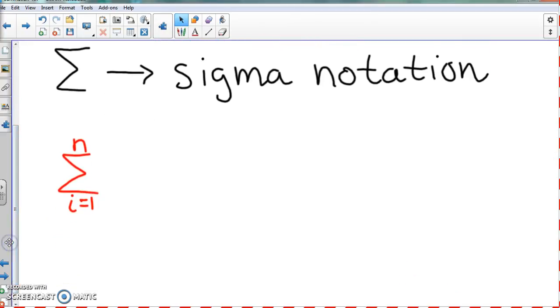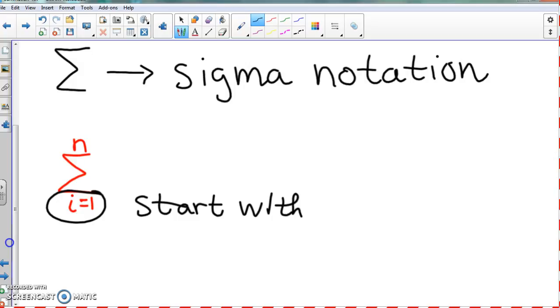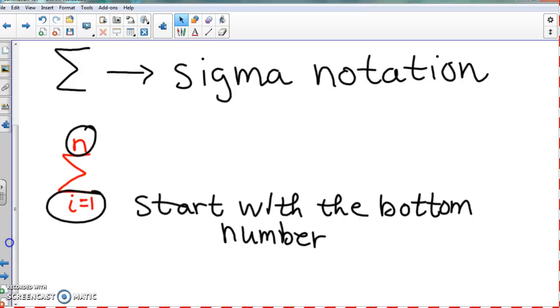It might change the letter, it might change the numbers and other stuff. But what's going to happen is we're going to have a list of numbers here. We're always going to start with this bottom number and we're going to end with the top number.